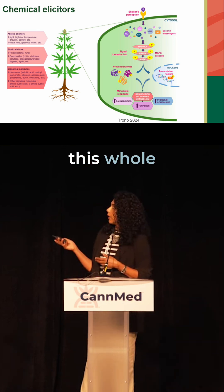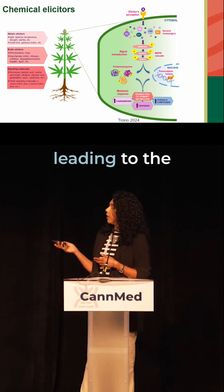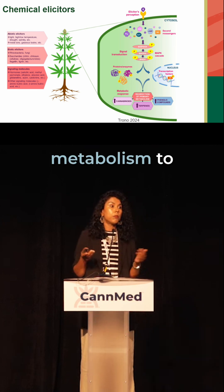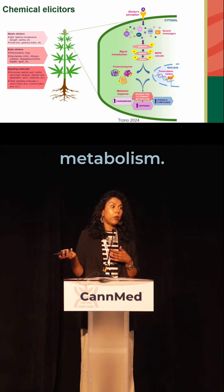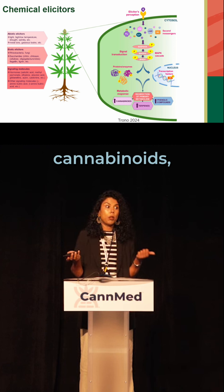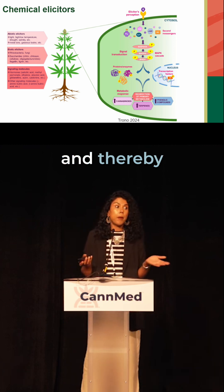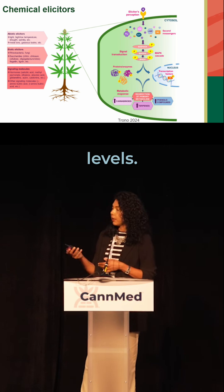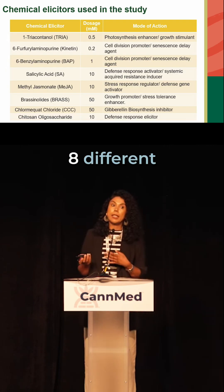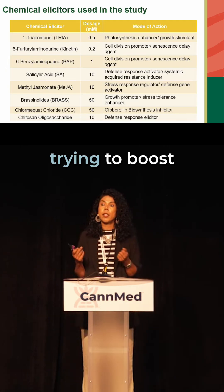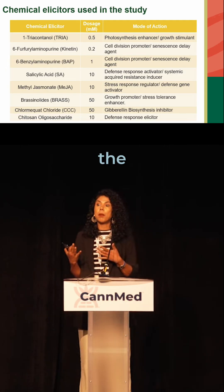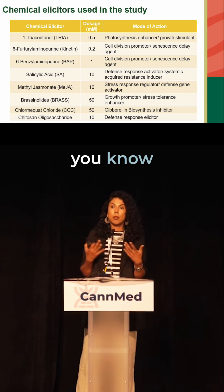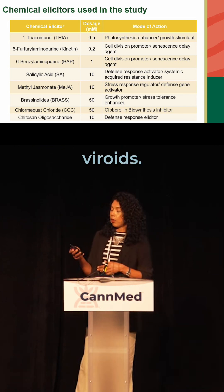You see this whole cascade ultimately leading to the redirection of resources from primary metabolism to secondary metabolism, which means increased cannabinoids, terpenes, and thereby a reduction in hopefully pest and disease levels. So we picked eight different elicitors, essentially trying to boost the plant's natural immunity and reduce the susceptibility to viroids.